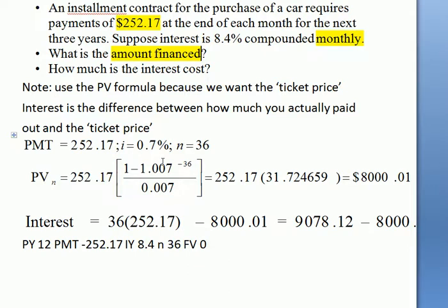Don't mix up the terms here in the center. Make sure that you do the calculations step by step. Inside the brackets, the total is 31.72. We multiply that by the PMT and it comes out at $8,000.01.